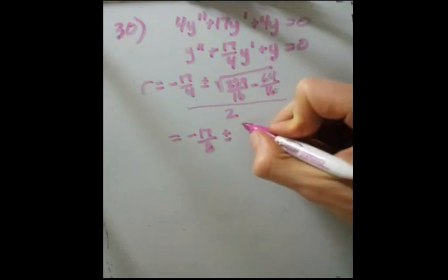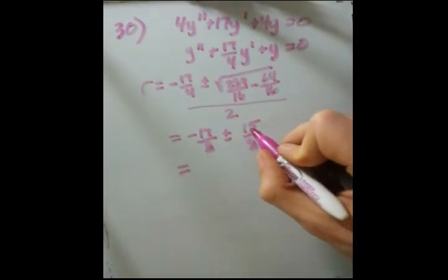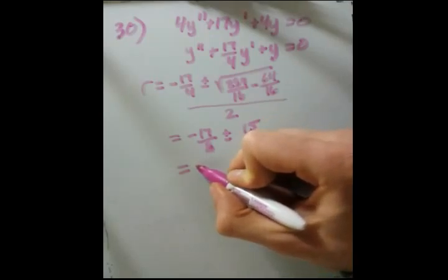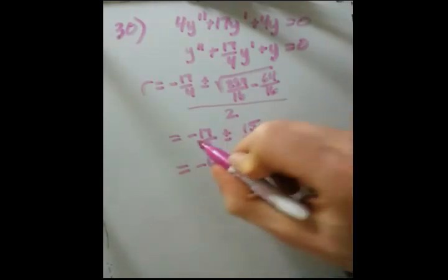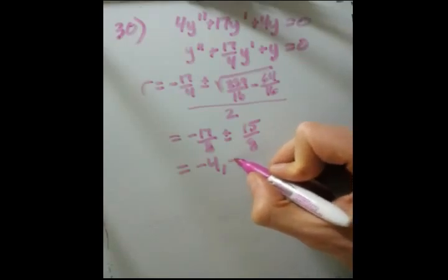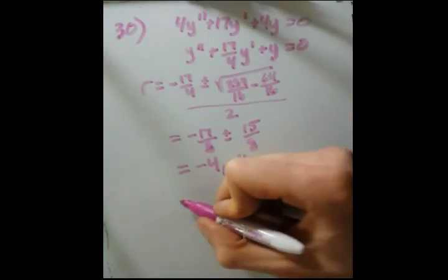15 over 4 over 2 is 15 eighths. So this is actually really nice because this is now, if we subtract the 15 eighths, we get minus 32 eighths, which is negative 4. If we add it, it's minus 2 eighths, which is minus 1 quarter. What do you know? More beautiful math. And we just plug it right in.